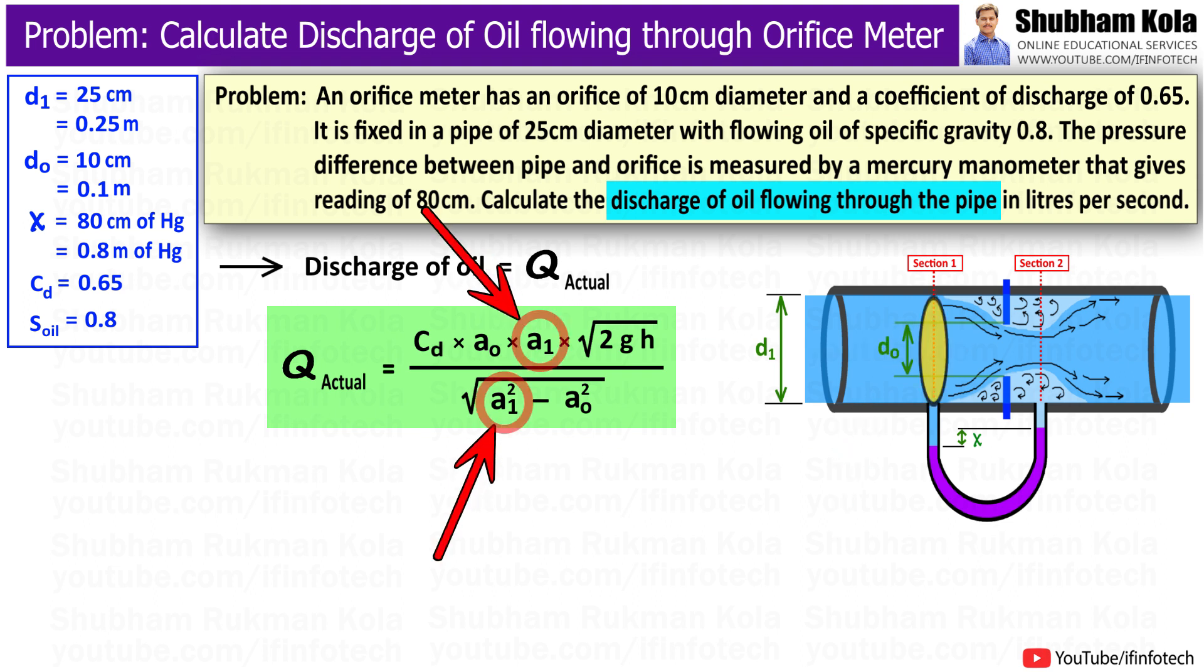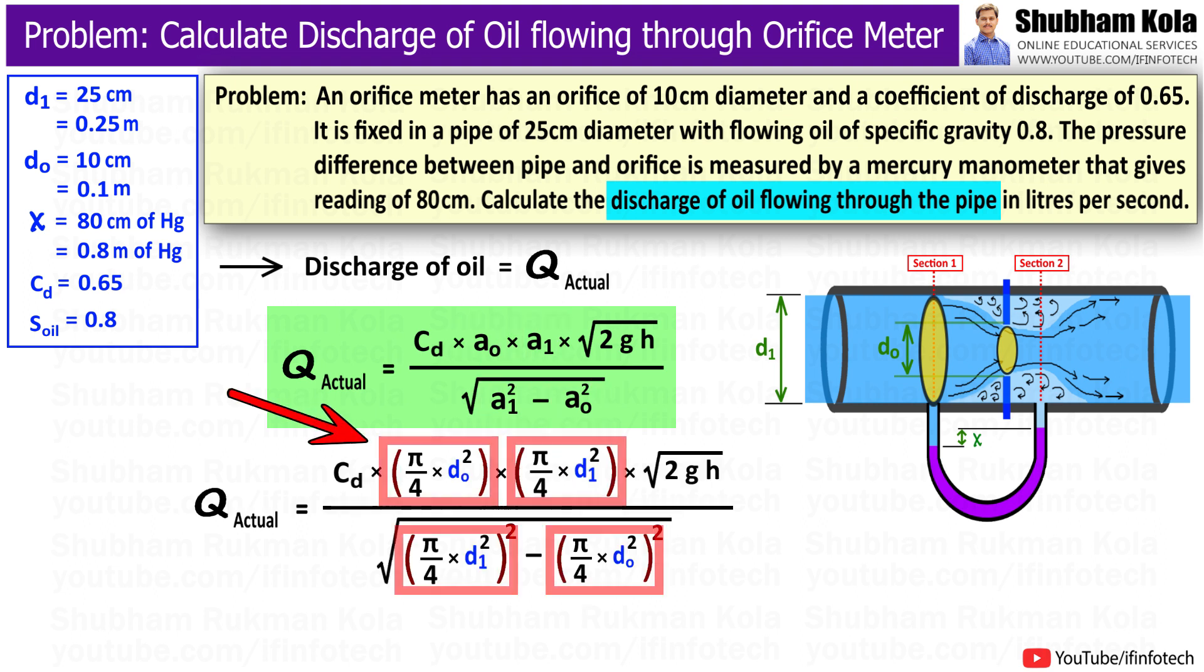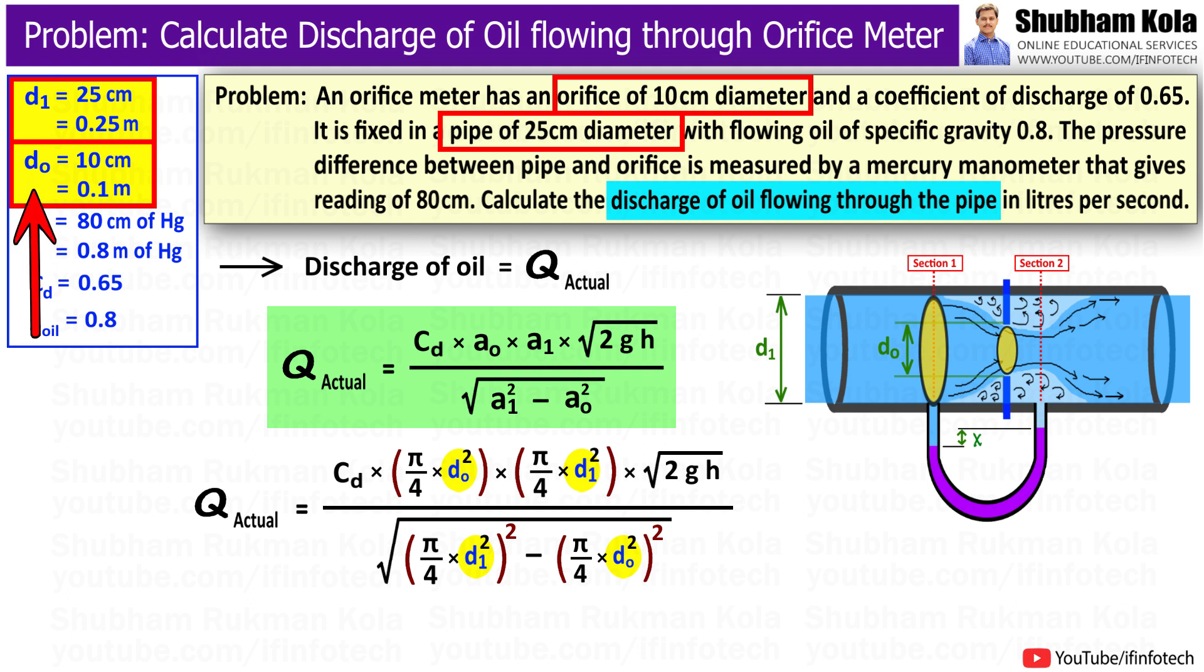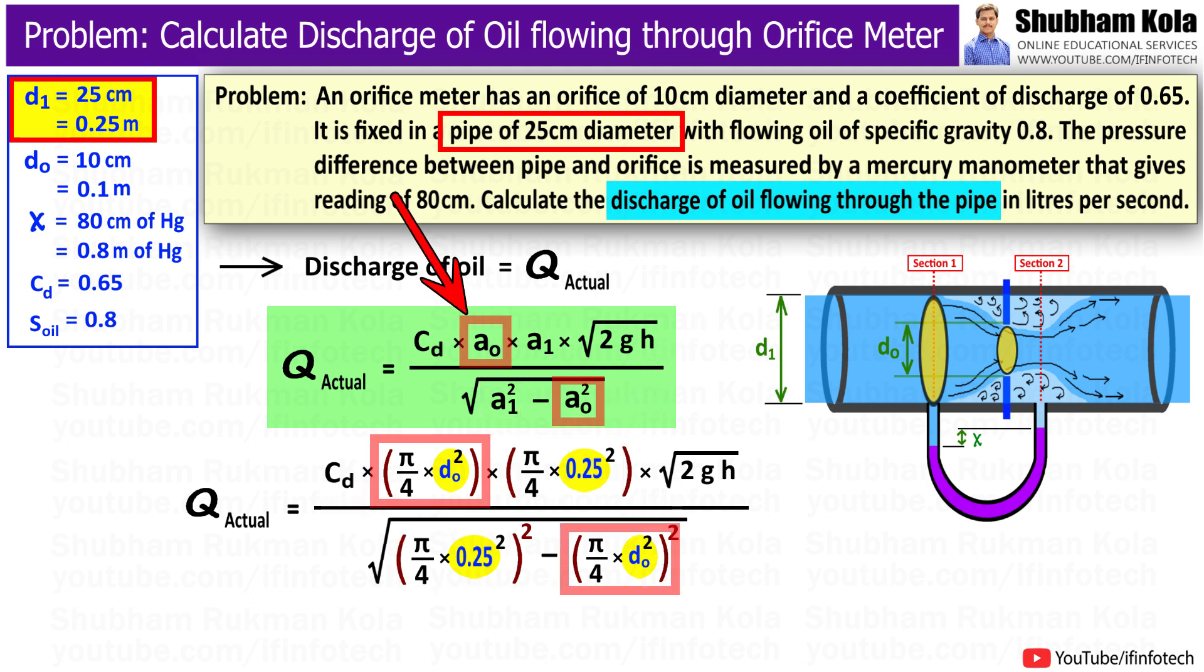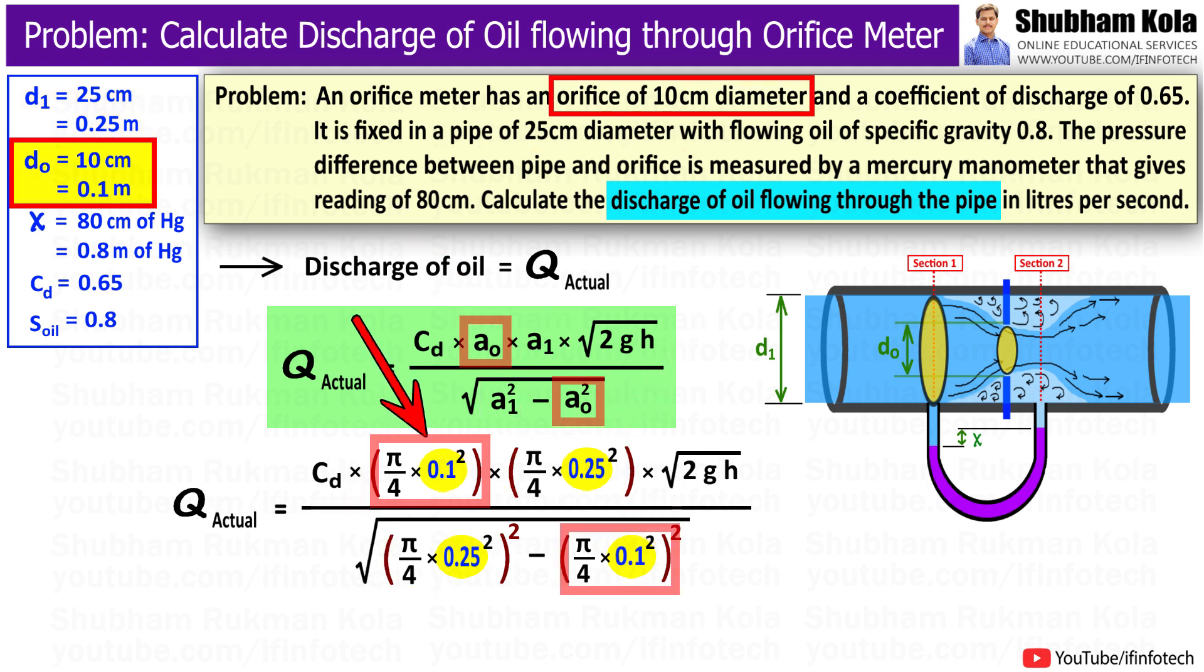Here, A1 is the area of pipe at section 1 and AO is the area of orifice. We know that area is equal to pi by 4 times diameter square, and the values of diameters d1 and dO have been given in the problem. Hence, in discharge formula, A1 will be pi by 4 times d1 square, that is 0.25 square, and AO will be pi by 4 times dO square, that is 0.1 square.